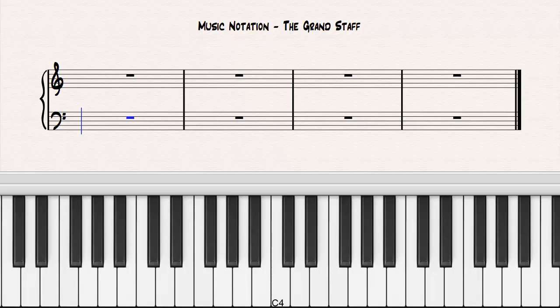Here are four consecutive occurrences of the C major scale. Notice how the stepwise progression of the notes is represented on the staff by placing notes consecutively on the lines and in the spaces between the lines.